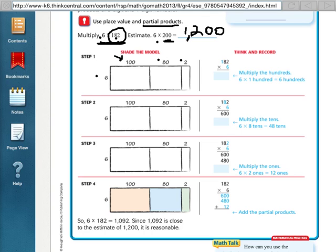Okay, we always start with our biggest one. So we'll have 6 times 100. 6 times 100 is 600. So we can write 600 over here. We've got our first partial product. Our first partial product is 600.